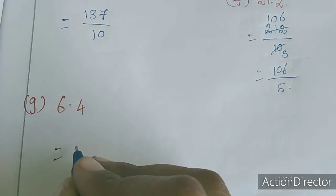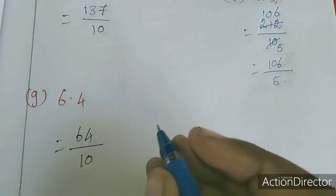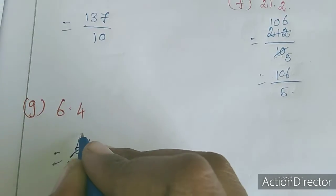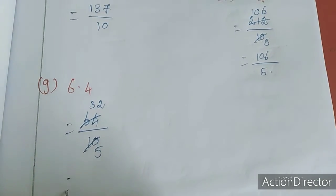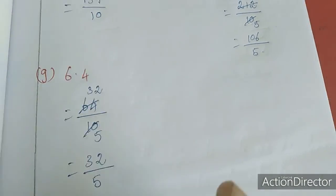6.4: 1 digit before dot, so 64 divided by 10. Using 2 table: 32 by 5. So the fraction is 32 by 5.